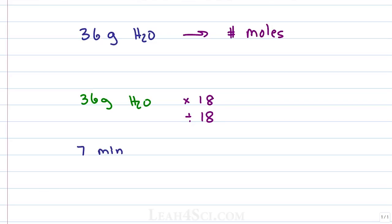Say you're given 7 minutes and you're asked to convert this into seconds. You know that there are 60 seconds in one minute, so do you set this up as 7 minutes multiplied by 60 seconds or divided by 60 seconds? The trick I'm going to show you takes a while to learn but it's very fast and easy to apply once you get it. Bear with me as we slowly build up the logic step by step so you can quickly and easily apply it to any chemistry, physics, or conversion problem.